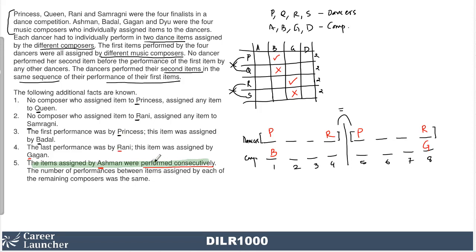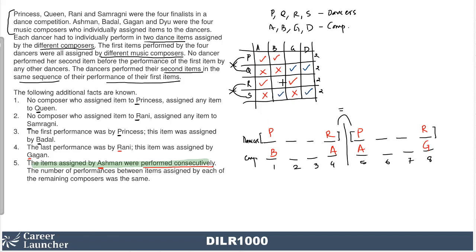The last performance was by R and was assigned by Gagan, so R takes G in position four and position eight. Therefore S will not take G. The items assigned by A were performed consecutively — since A appears only once in each half, the only consecutive positions spanning both halves are positions four and five. So R has A and P has A. This means S cannot have A and Q cannot have A, which forces Q to have G and D, and S to have B and D.